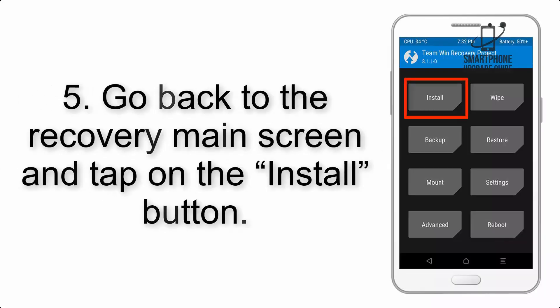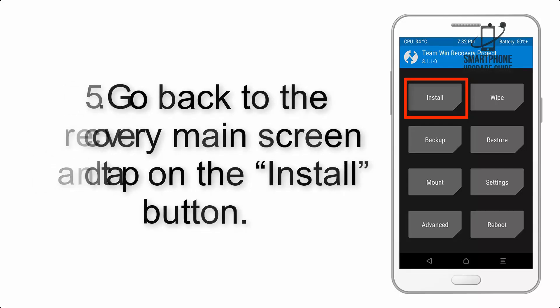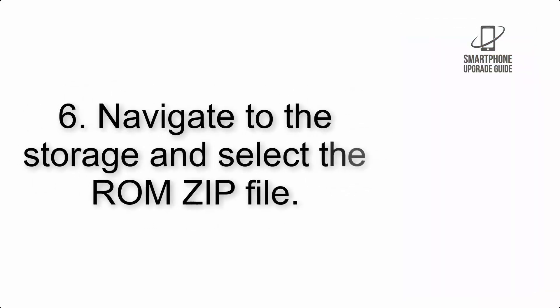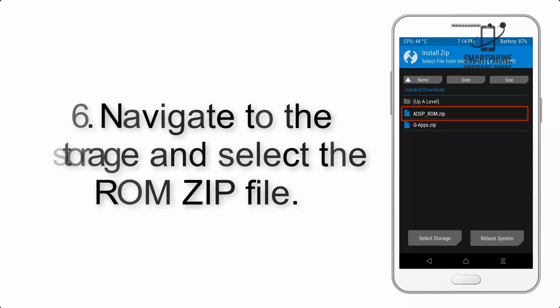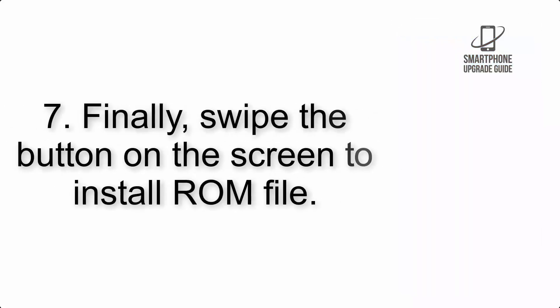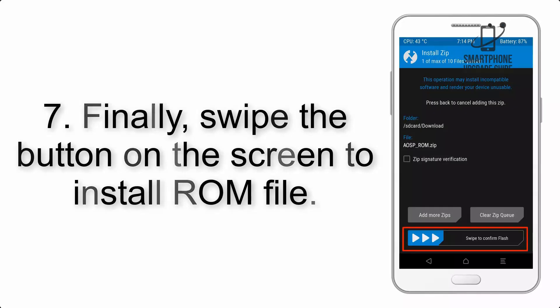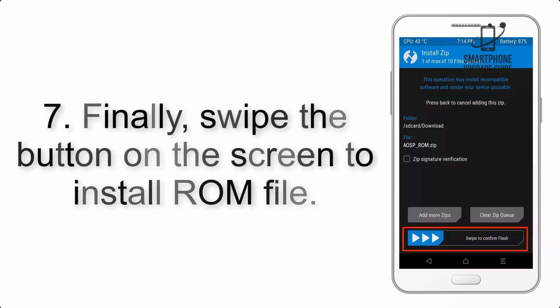Step 5: Go back to the recovery main screen and tap on the Install button. Step 6: Navigate to the storage and select the ROM zip file. Step 7: Finally, swipe the button on the screen to install the ROM file.